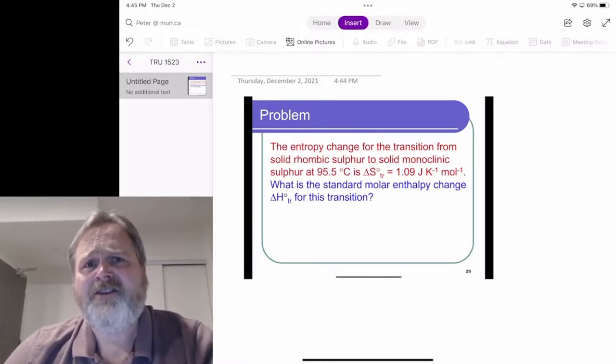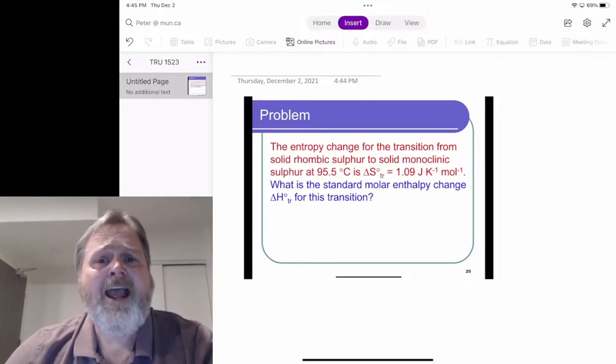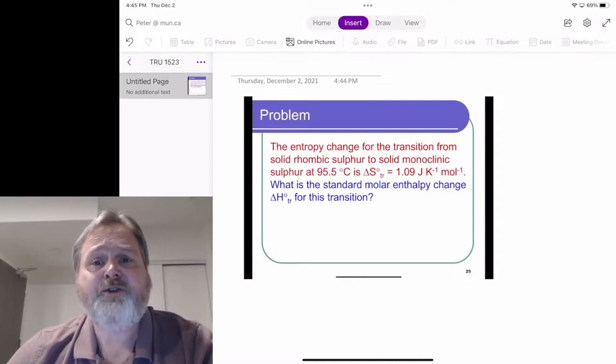It turns out this transition has a transition temperature of 95.5 degrees Celsius, and it has an entropy change of 1.09 joules per kelvin per mole.